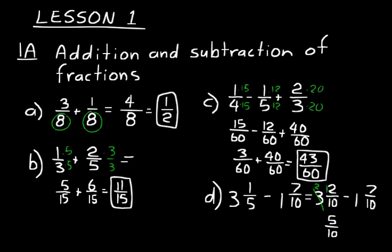Now let's subtract our whole number parts. 2 minus 1 is just 1. 1 and 5 tenths. 5 tenths can reduce to a half, so we can write this 1 and 1 half. You basically have two subtraction problems when you're working with mixed numbers. You subtract the whole number parts and also subtract the fraction parts. Same with addition.